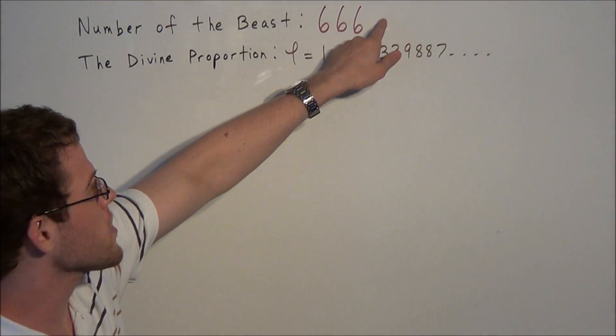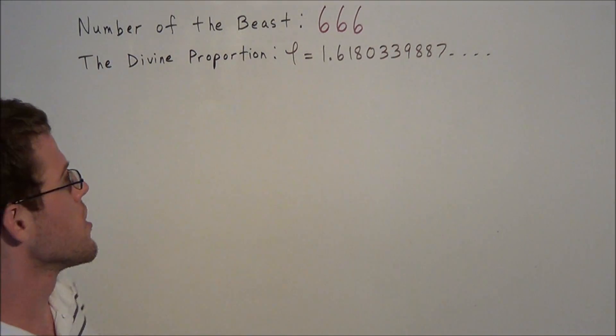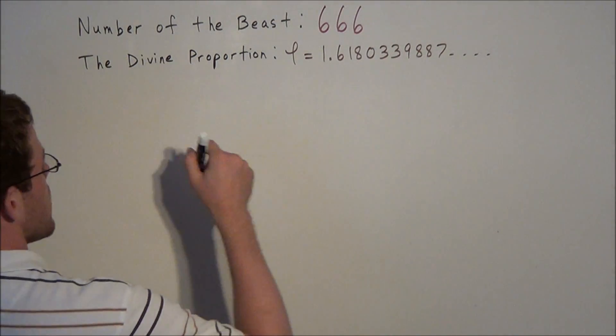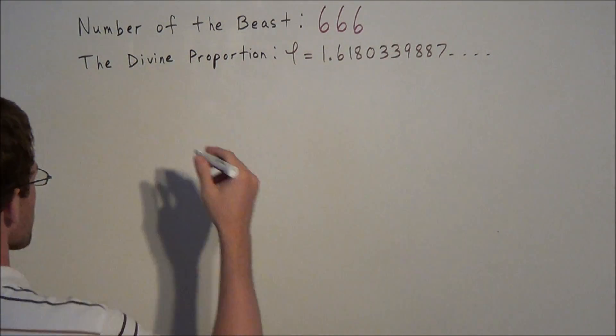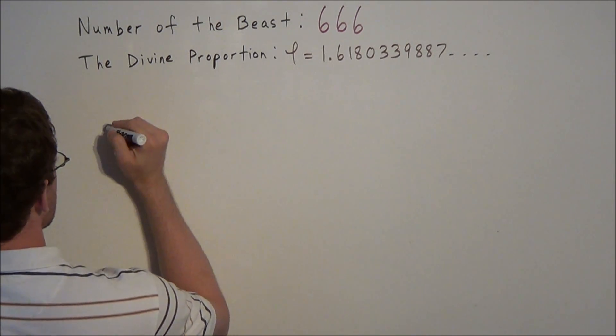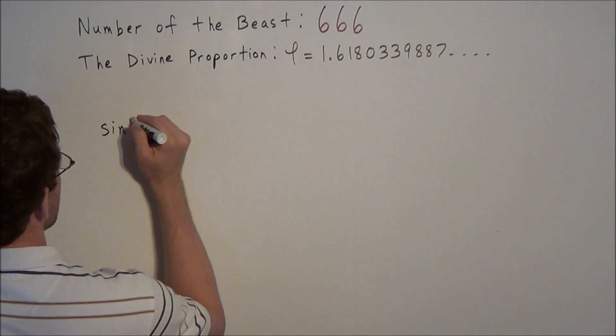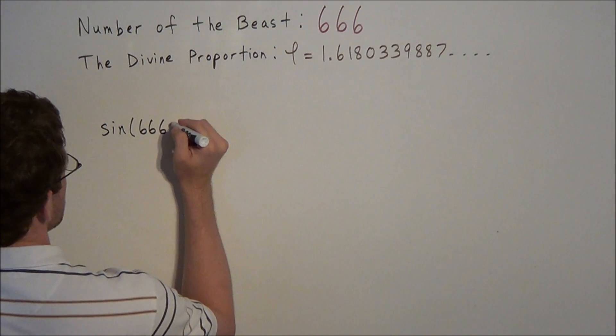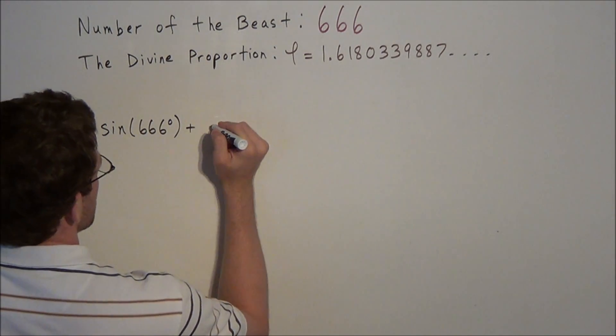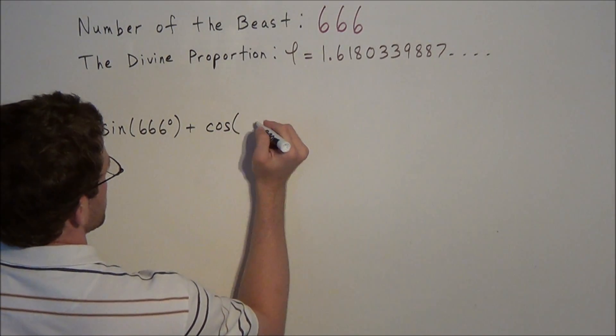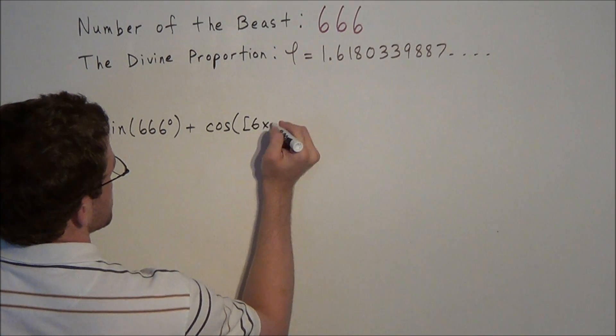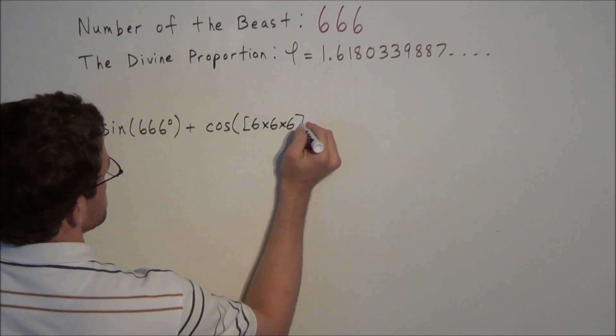So, let's see how we could explore this number 666. Using a pocket calculator, you could type the expression sine of 666 degrees plus cosine of 6 times 6 times 6 degrees.